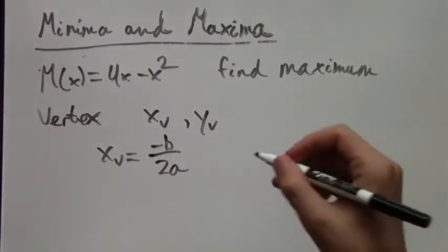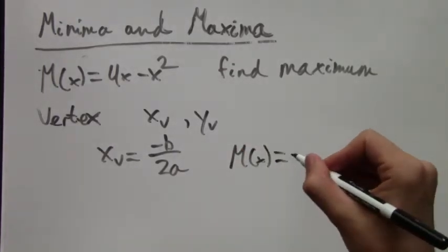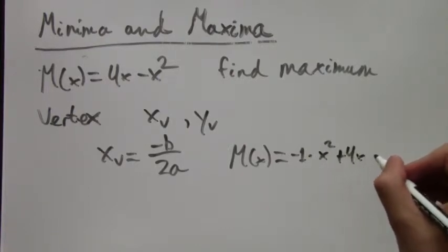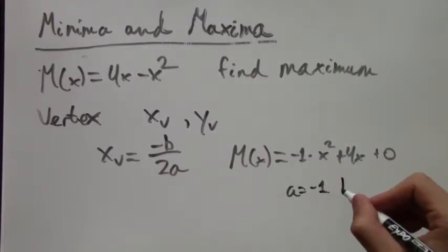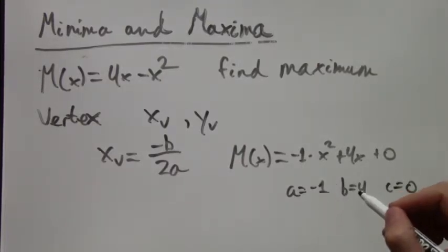And the formula for the x-coordinate of the vertex is negative b over 2a. So we have to rewrite the formula for the parabola in standard form. Negative 1 times x squared plus 4x plus 0. So a equals negative 1, b equals 4, and c equals 0. In this case, we don't need c because we're just calculating the vertex.